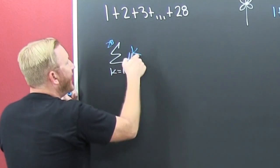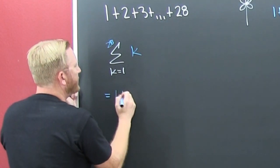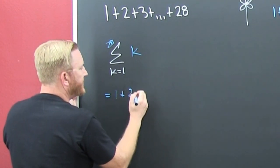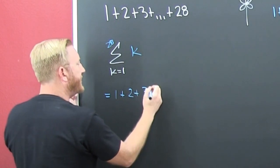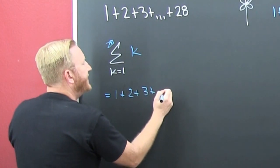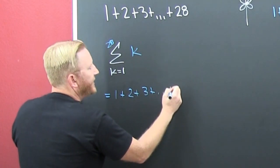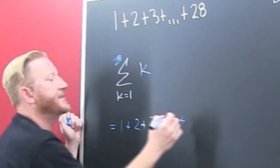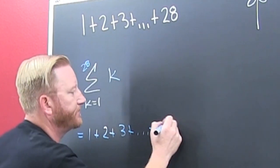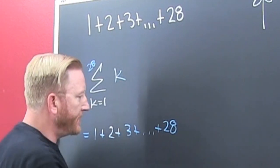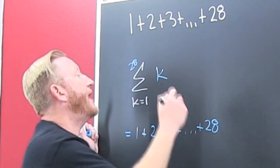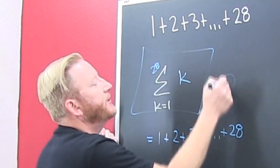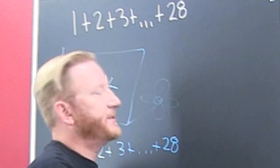So when K is 1, that's a 1. Plus, then K indexes to 2, then it goes to 3, and so on — that's going to go all the way to 28 and stop. So that one does create the original series.